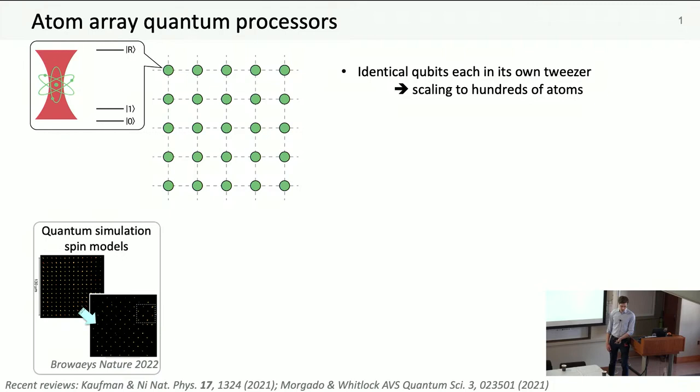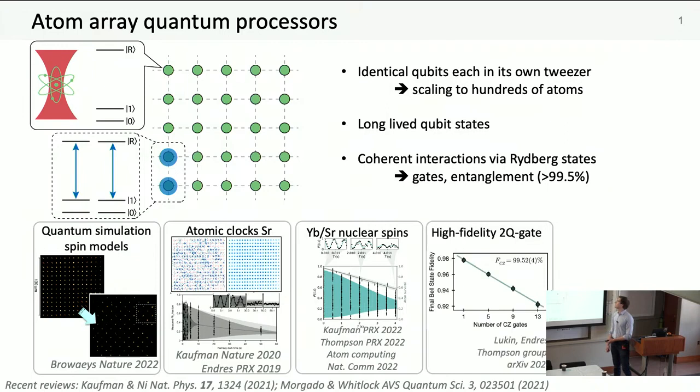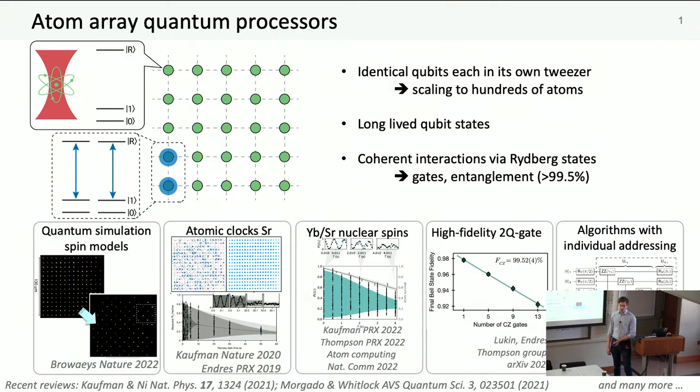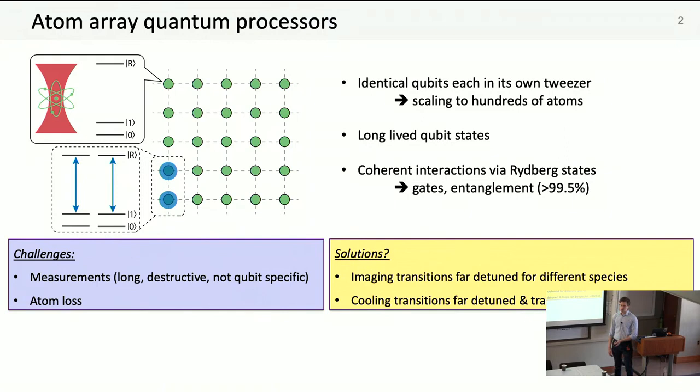I want to start by motivating why we would bother to go to the effort of adding all these lasers. For this audience, we don't really need to motivate atom array quantum processors. We have identical qubits in tweezers that give us a way to scale to hundreds of atoms. We can have long-lived qubit states in hyperfine or nuclear spin states, and we're seeing really awesome progress in gate and entanglement fidelity now pushing above 99%.